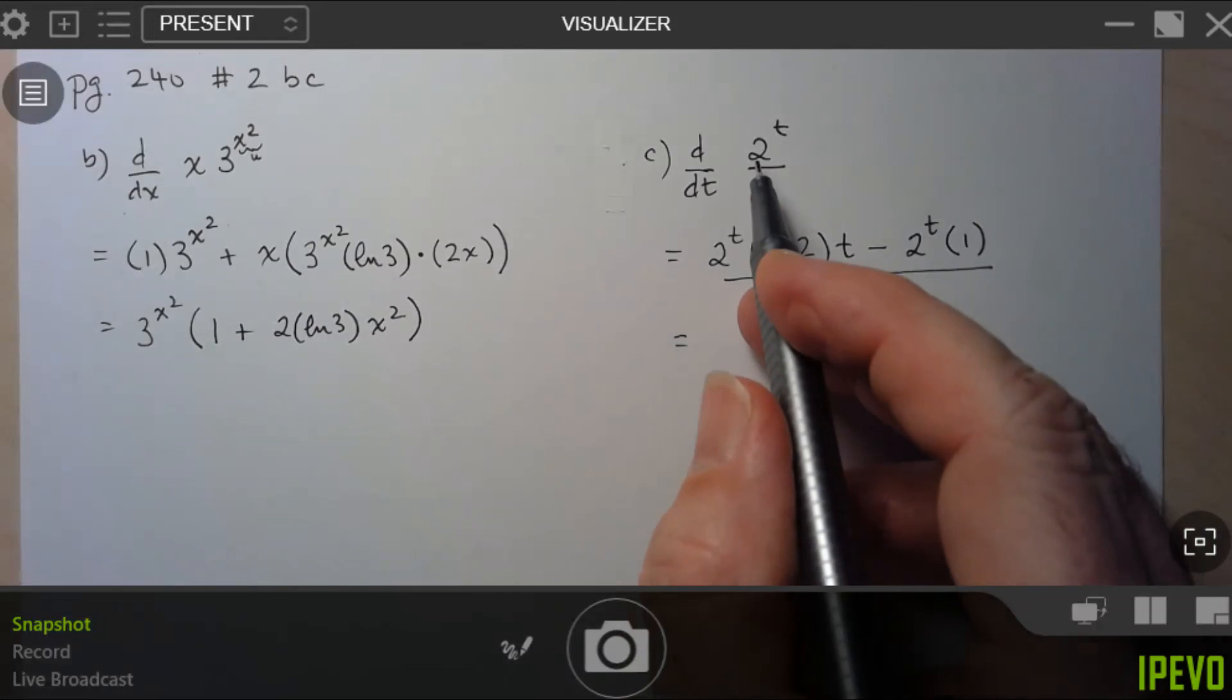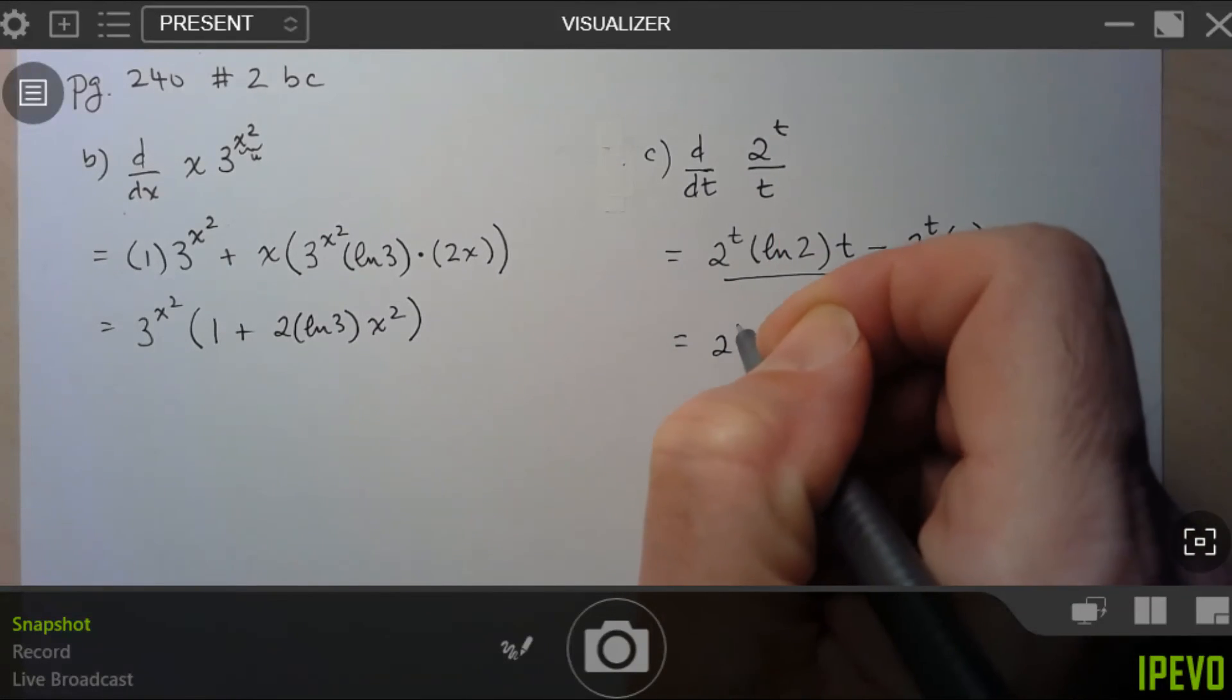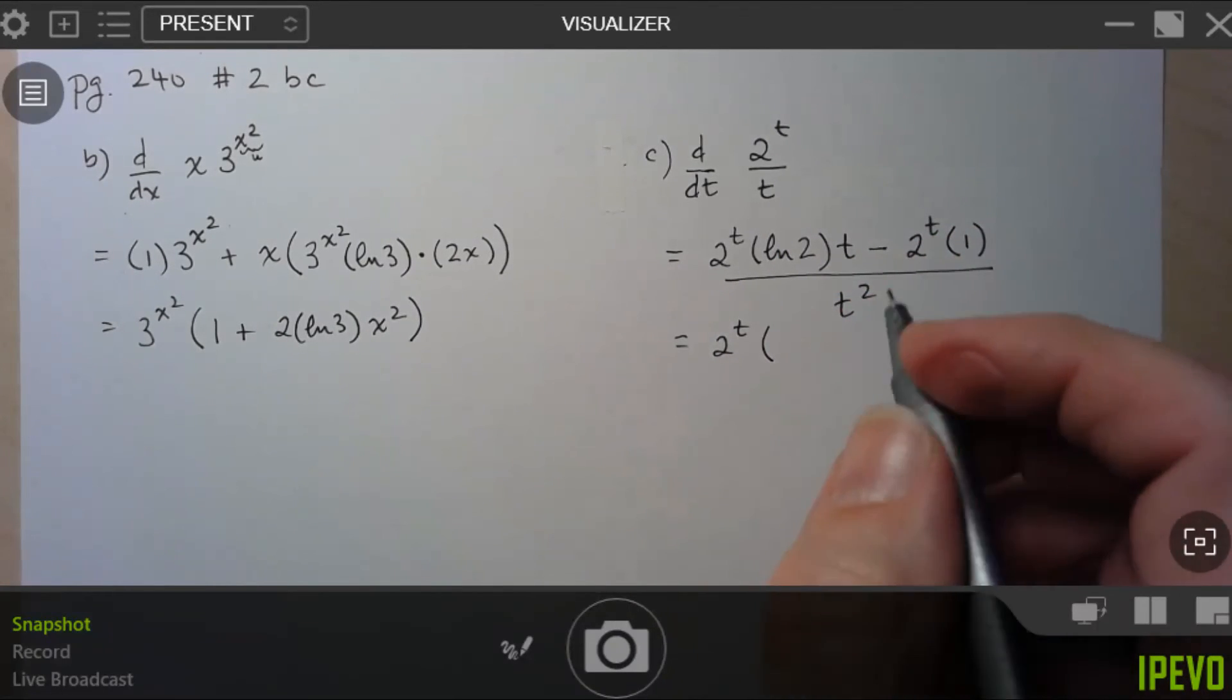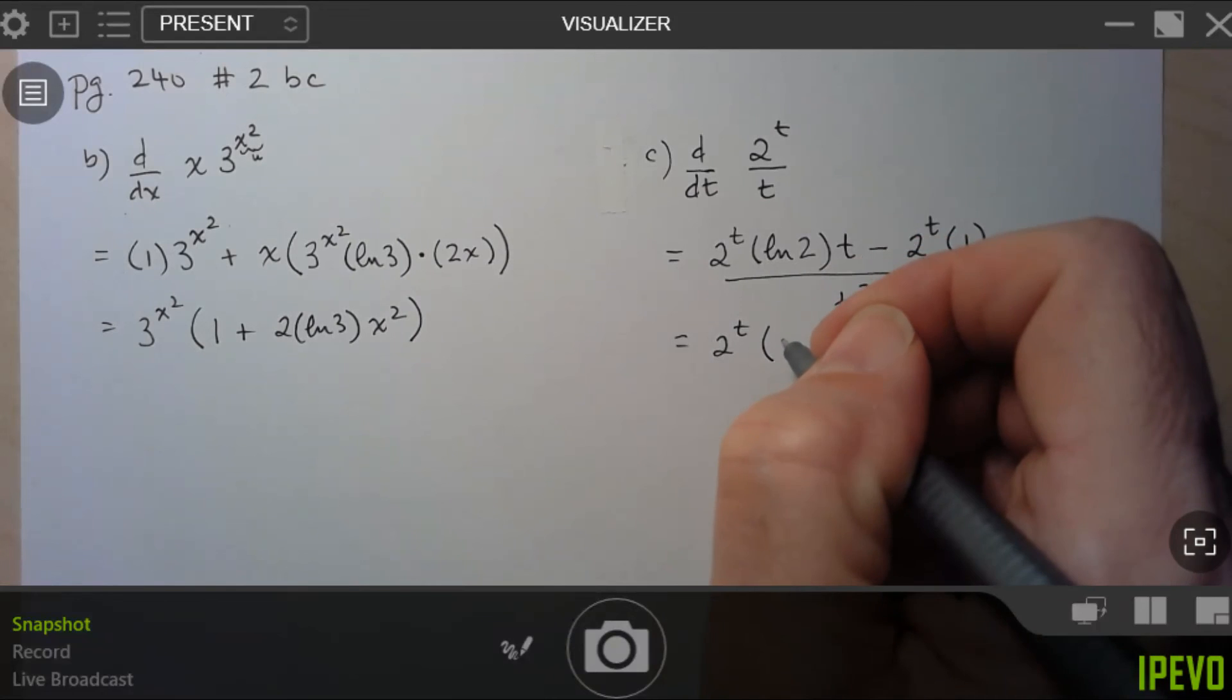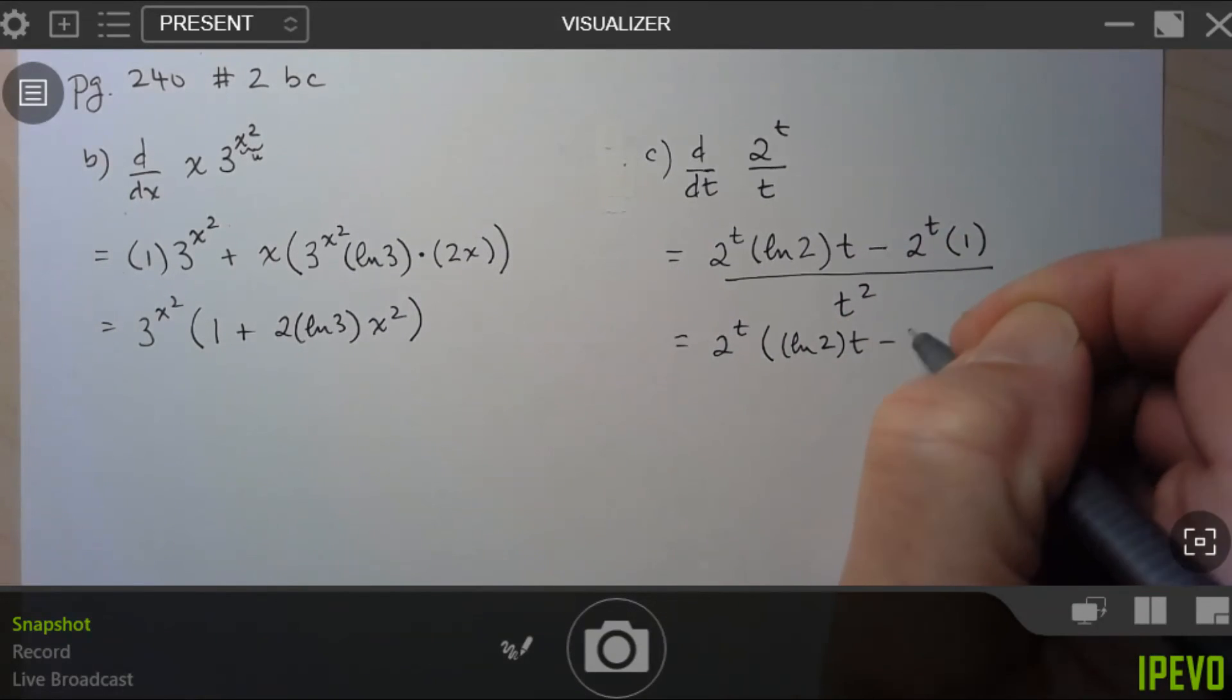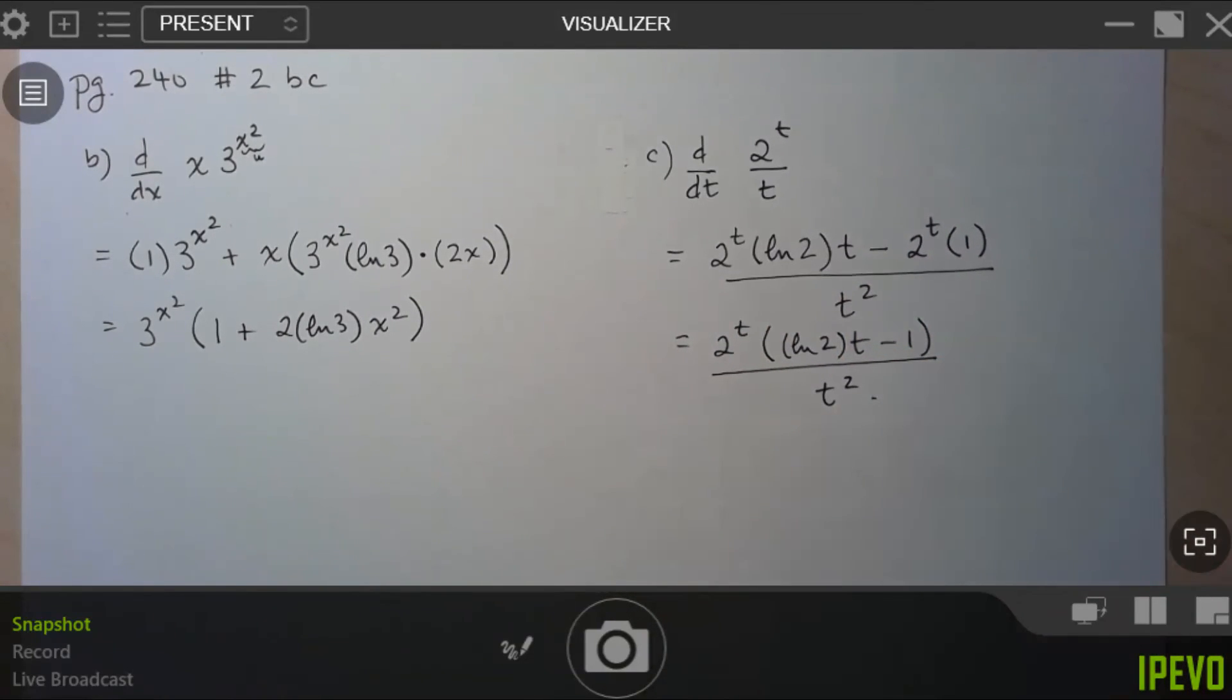So anytime you're taking derivatives of exponential functions, you know the function's going to show up a second time. So 2 to the t, and let's see what we're left with here. Well, it looks like we're just left with ln of 2 times t, and then here just minus 1 all over t squared. And that's about as simple as we can get it. All right, that's it for these.